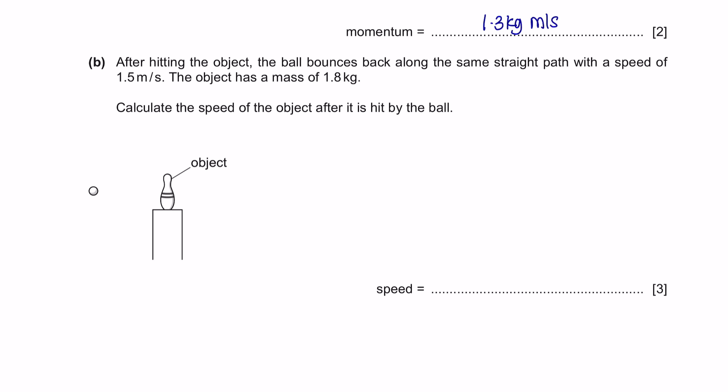Part B. After hitting the object, the ball bounces back along the same straight path. So at first the ball traveled this way, and it says that after hitting it, it bounces back along the same straight path, which is like this, with a speed of 1.5 meters per second. So it moved in the opposite direction at a speed of 1.5. The object has a mass of 1.8 kilograms. Calculate the speed of the object after it is hit by the ball.